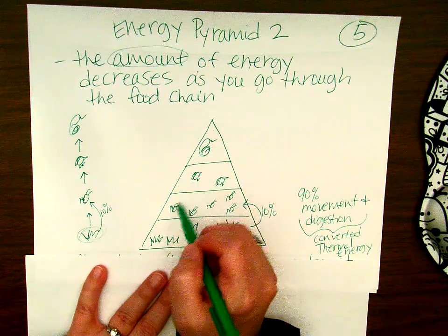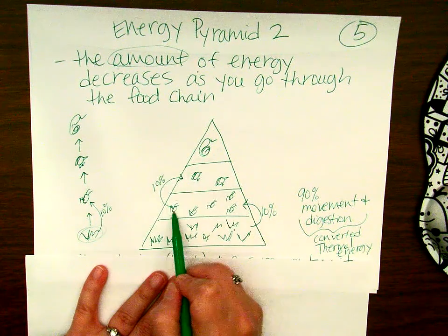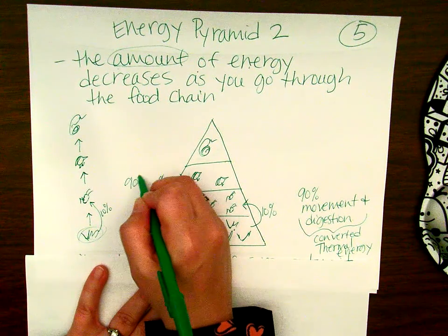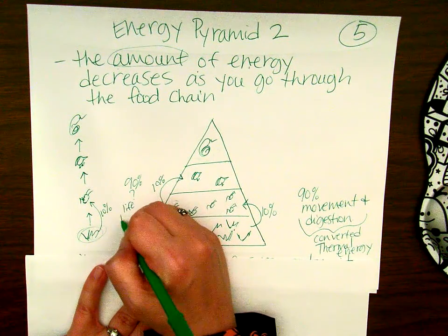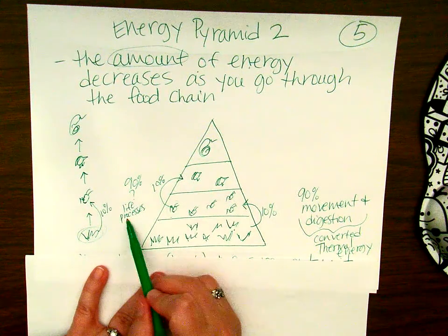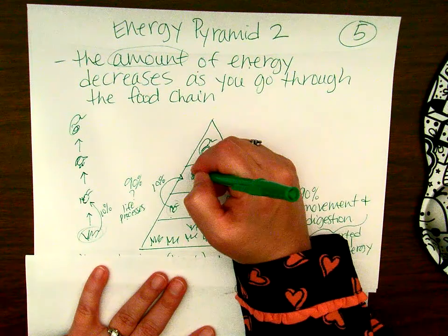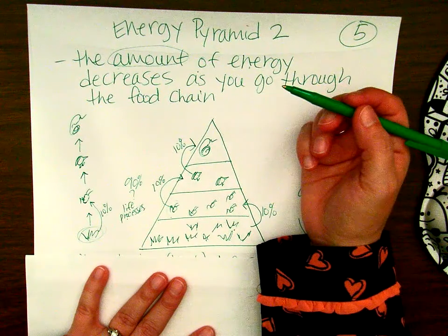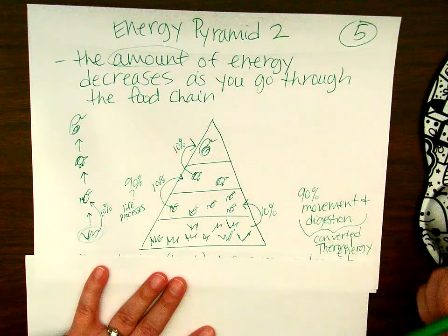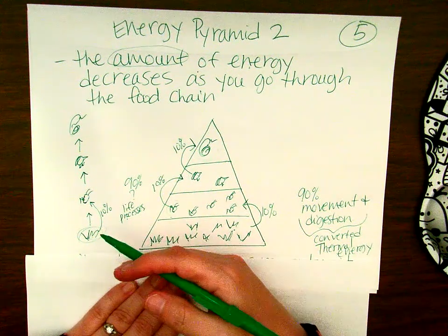This bird will eat the grasshopper and only get 10% of the energy the grasshopper has. The other 90% goes to life processes and gets converted into thermal energy. Then the snake eats the bird and only gets 10%, with that 90% again going to life processes and converted into thermal energy.